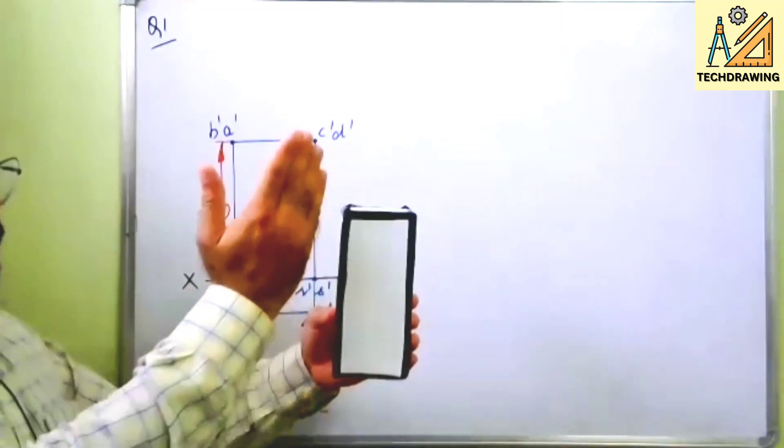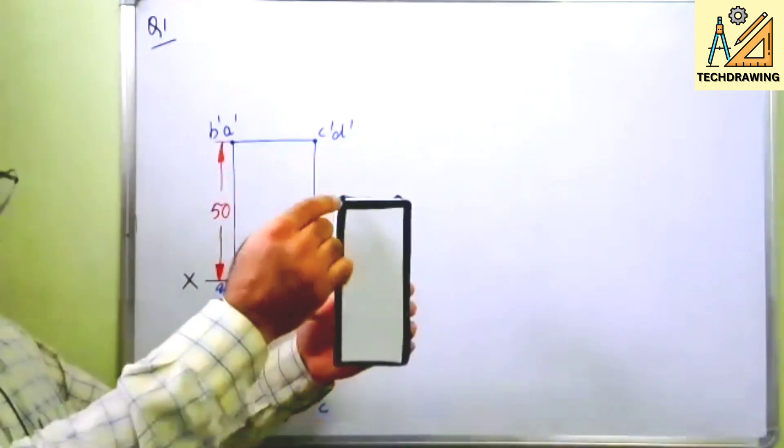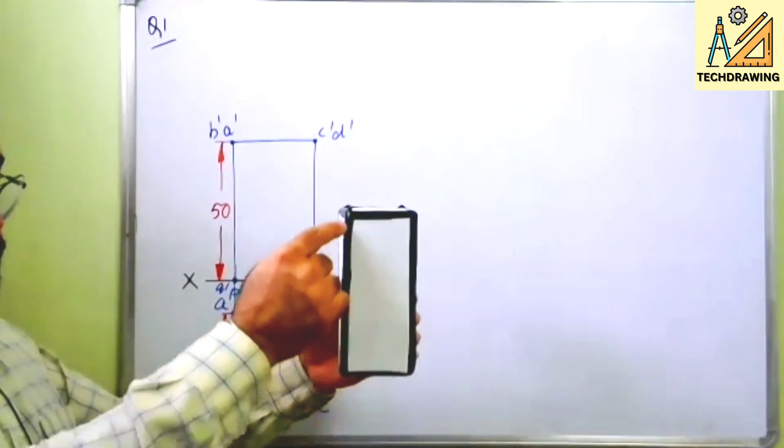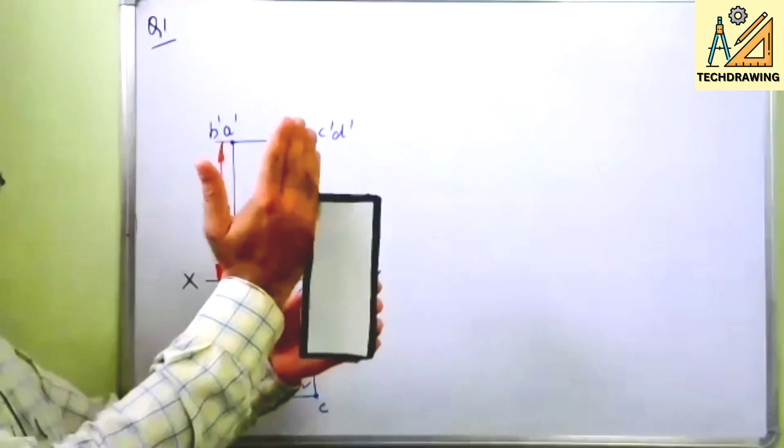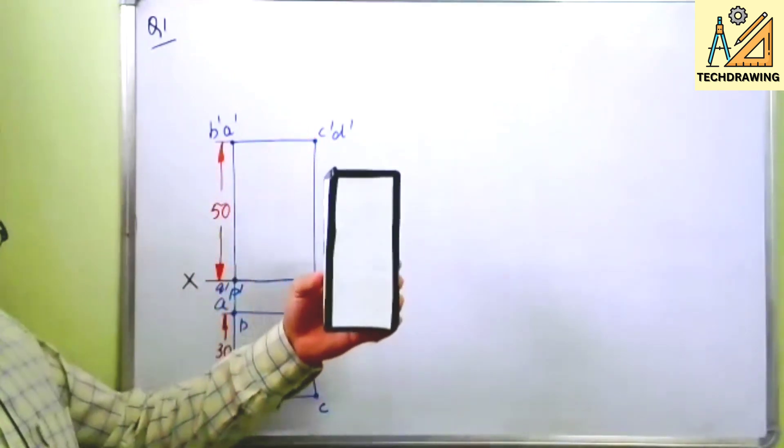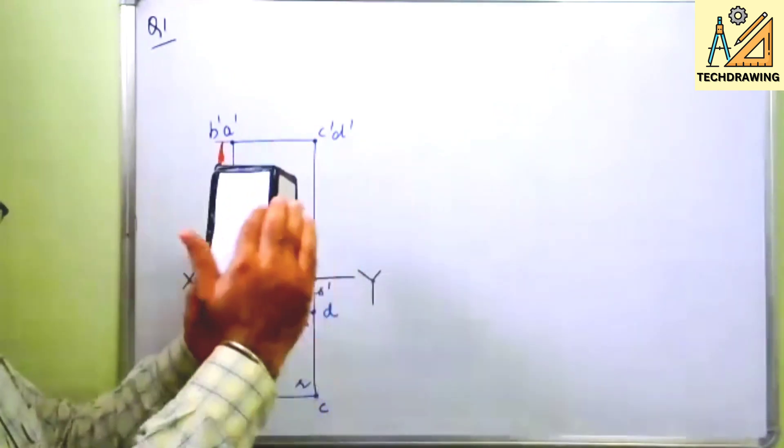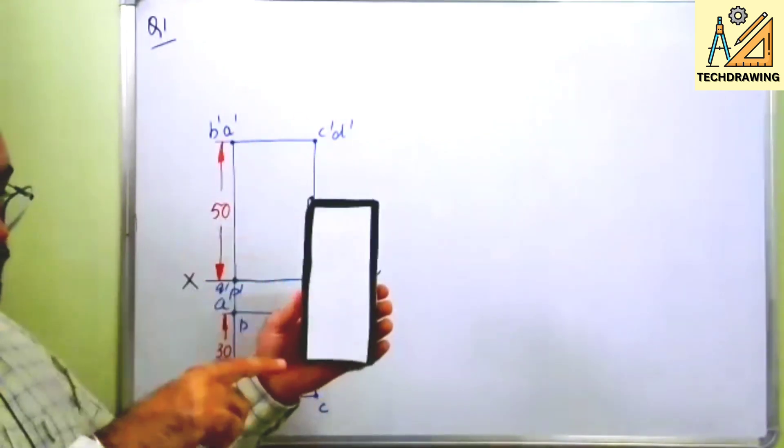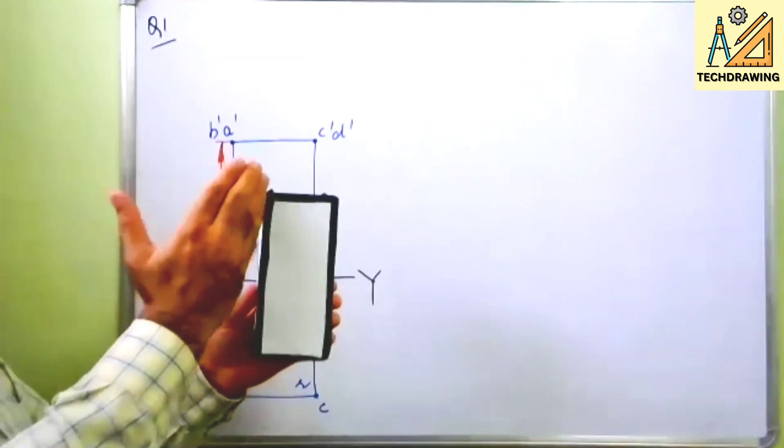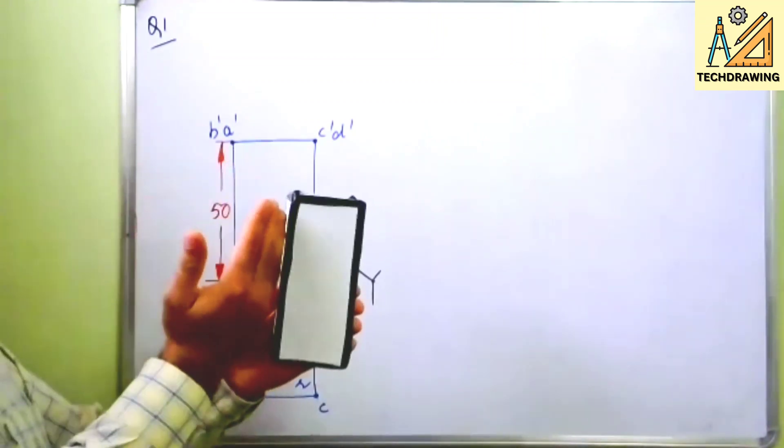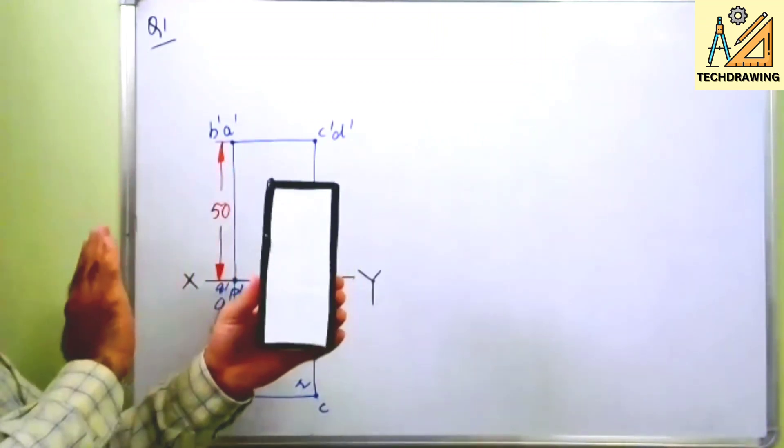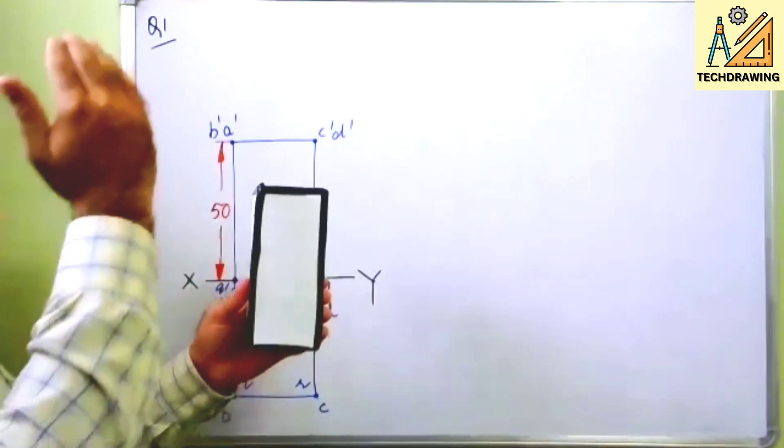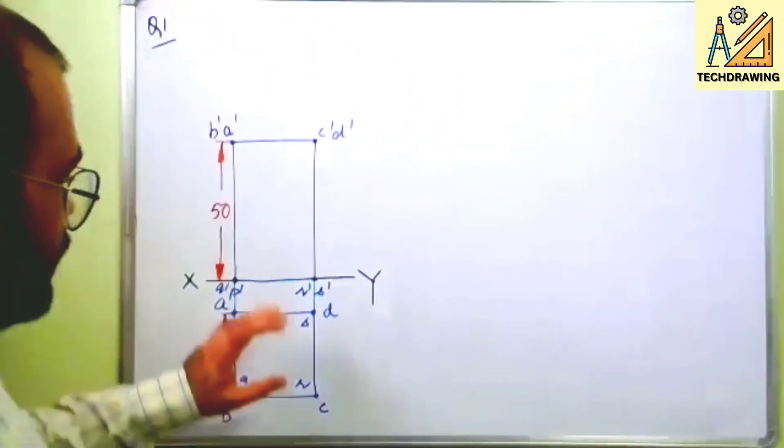So let us say I am cutting it from this longer edge. I am cutting it from here. Let us say I have cut it from here. After cutting I have opened it, I have unfolded it. So this is B, this is Q.